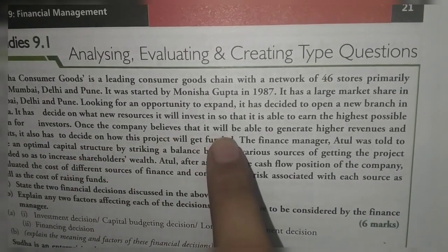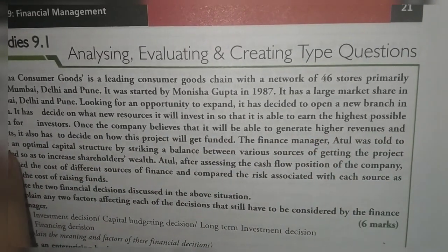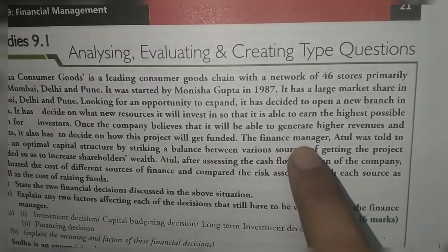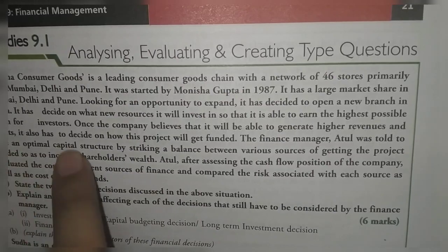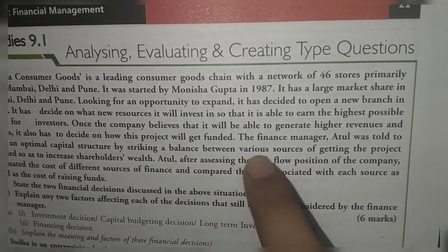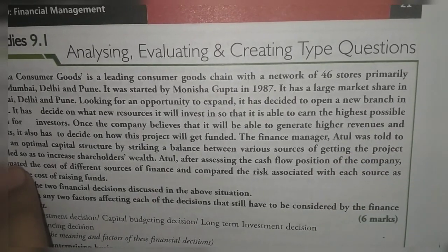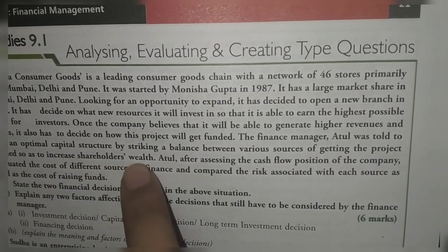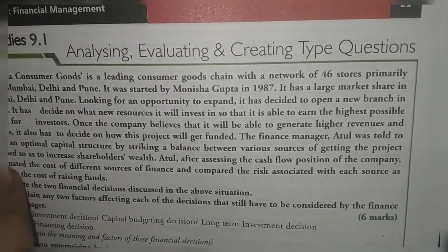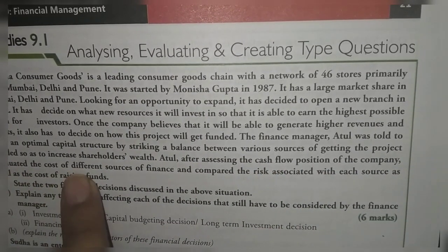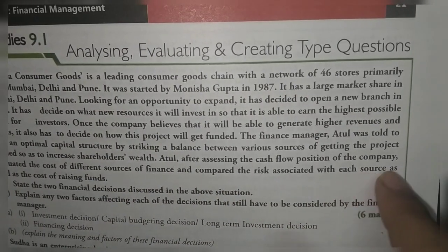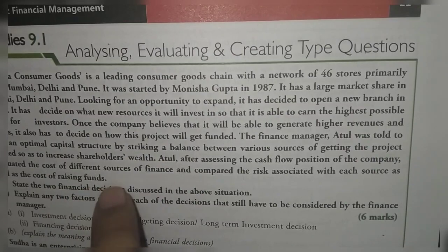Once the company believes that it will be able to generate higher revenue and profit, it also has to decide on how this project will get funded. The finance manager, Atul, was told to have an optimal capital structure by striking a balance between various sources of getting the project funded, so as to increase shareholder's wealth. Atul, after assessing the cash flow position of the company, evaluated the cost of different sources of finance and compared the risk associated with each source as well as the cost of raising funds.